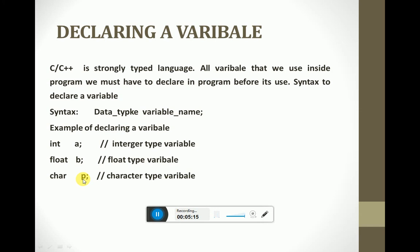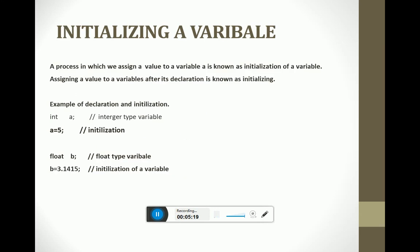After declaring a variable, the next step is initializing a variable. A process in which we assign a value to a variable is known as initialization. Example: int a is declaration, and a = 5 is the initialization of that variable. For float: float b is the declaration, and b = 3.1415 is the example of initializing the variable — assigning a value to the variable.